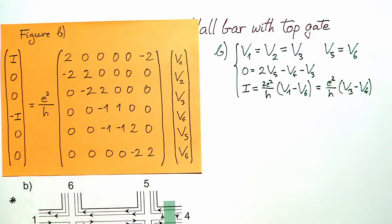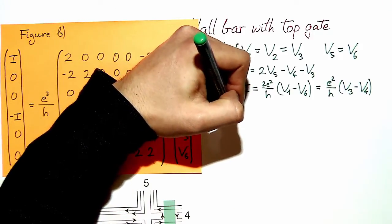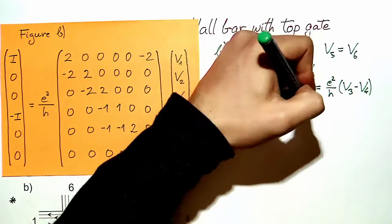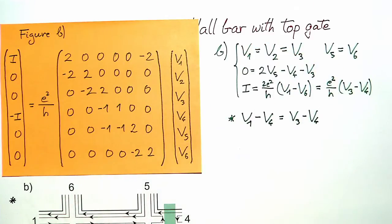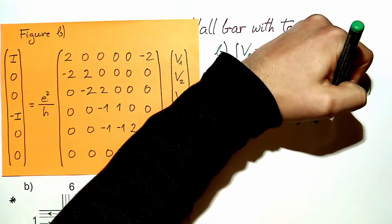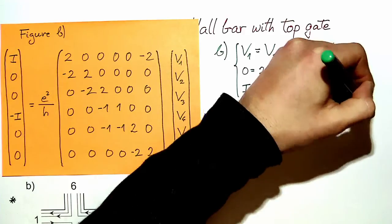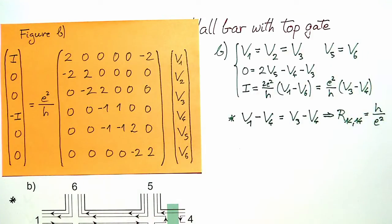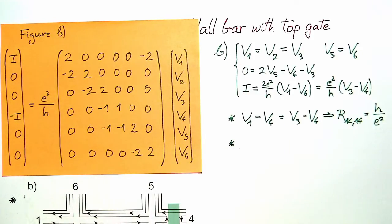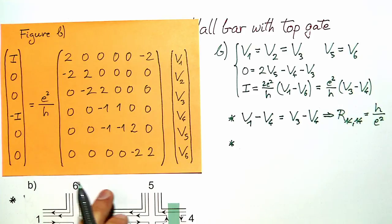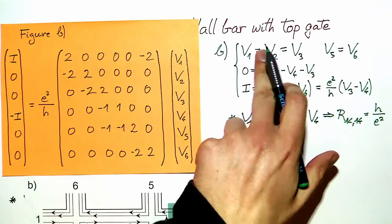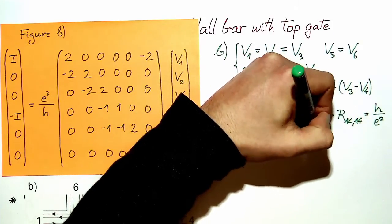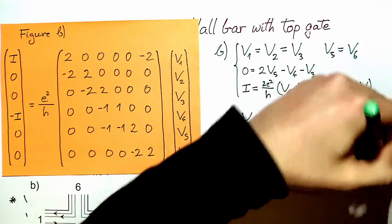With that system of equations, we calculate the two-terminal resistance by considering V1 minus V4. Since V1 equals V3, and reading from the equation, we find the resistance h/e². The longitudinal resistances V6 minus V5 and V2 minus V3 are both 0 because the voltages are the same, giving the same longitudinal resistance of zero at both locations.